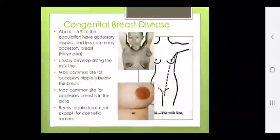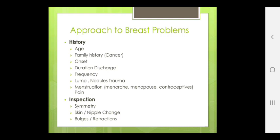Approach to breast problems is through history, inspection, palpation and diagnostic imaging. History includes age, family history of cancer, onset and duration of discharge, frequency, trauma, menstruation and its relevance. Inspection includes symmetry, skin, bulges, any changes in skin and retractions.